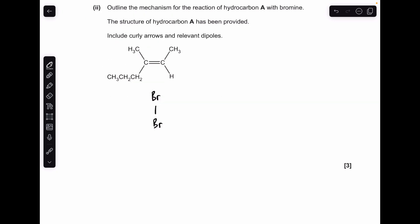Moving on to the mechanism. We'll put the dipole on the bromine molecule, so it's delta-positive closest to the double bond, delta-negative furthest away. We'll take a curly arrow from the middle of the carbon-carbon double bond onto that delta-positive bromine. And then another curly arrow to show the repulsion of the pair of electrons from the Br-Br bond onto that bottom bromine.